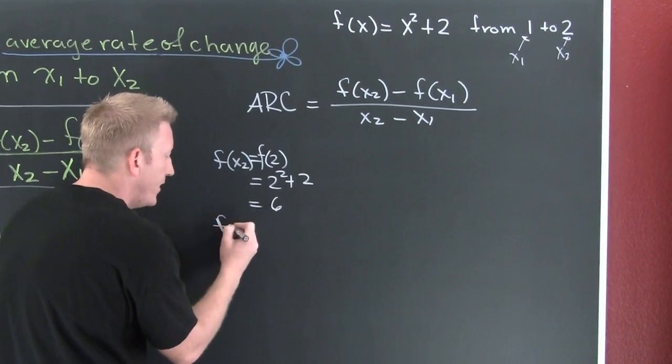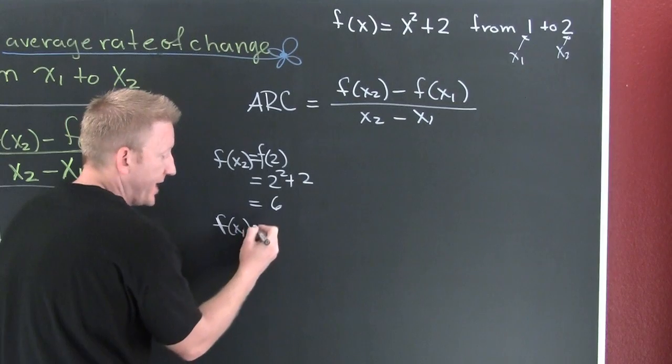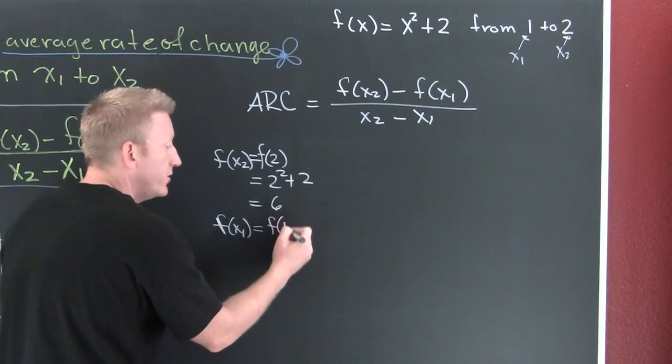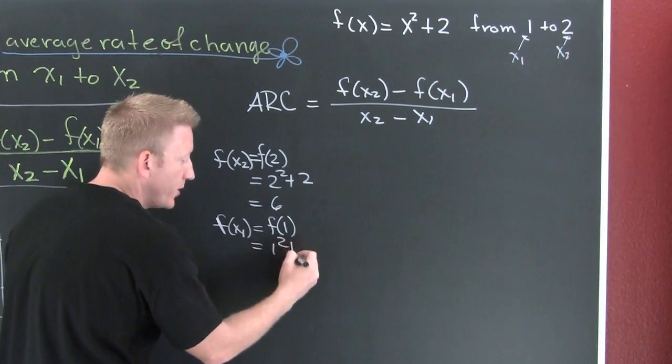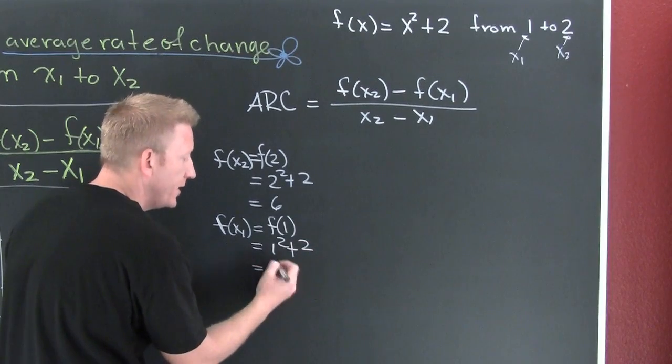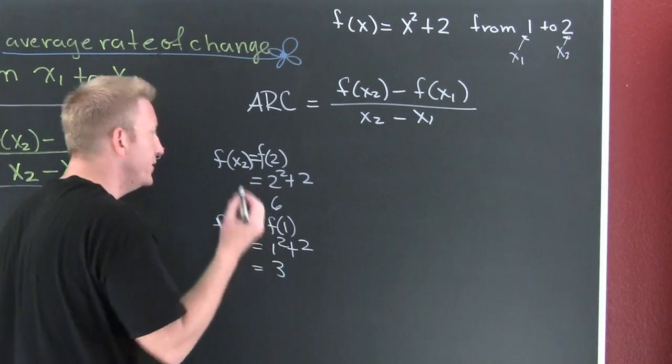So now I'm gonna find f of x1. I'm looking for f of 1. So then this is gonna be 1 squared plus 2, which turns out to be 3. Very nice.